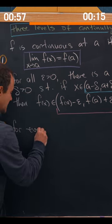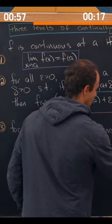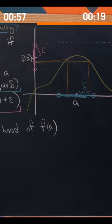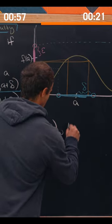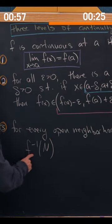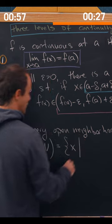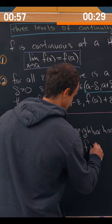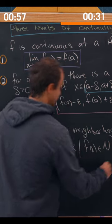For every open neighborhood of f of a, we'll give this open neighborhood a name, n. So let's take the preimage of n equal to all x in the domain such that f of x is inside of this neighborhood.